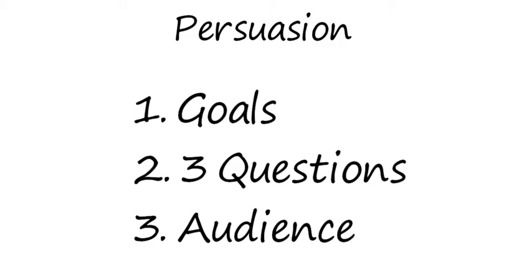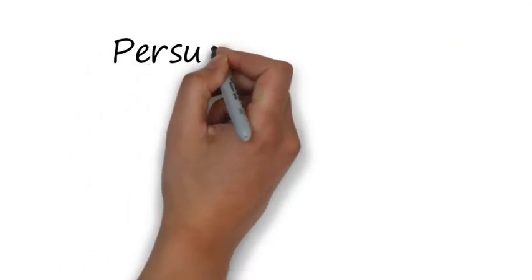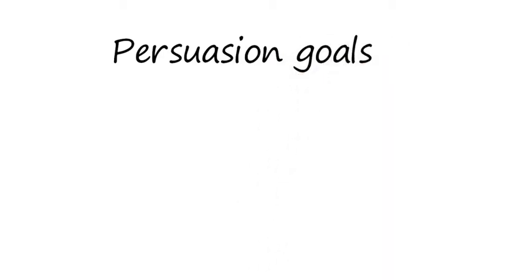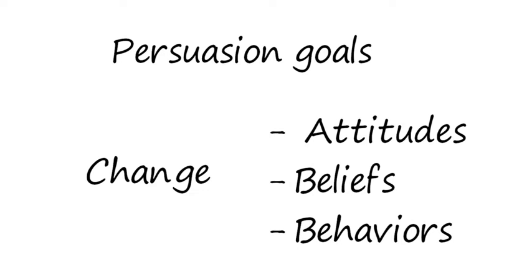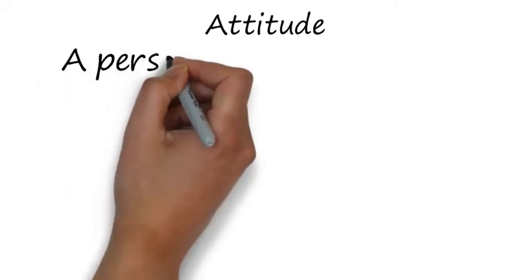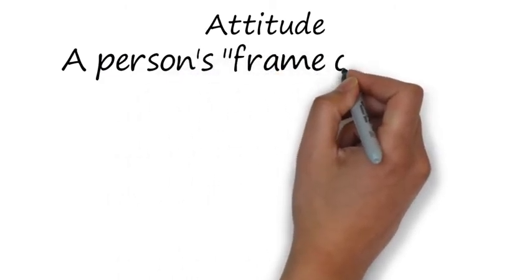The fundamental goal of persuasion is to create change. Specifically, there are three areas of change that people try to influence: changes in attitudes, beliefs, or behaviors. An attitude is the frame of mind one has in favor of or opposed to a person, policy, belief, institution, and so on.